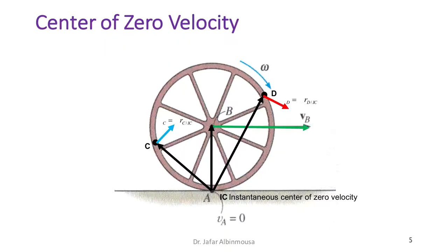Here is another example using the instantaneous center of zero velocity: a wheel rolling on a surface without slipping. If there is no slipping, point A — where the surface and wheel are in contact — is special. The surface has zero velocity, so point A has zero velocity. Since point A belongs to both the surface and the wheel, we can use it as the instantaneous center of zero velocity.